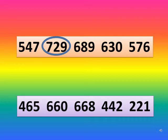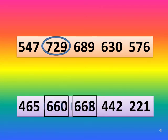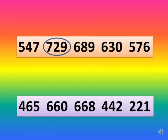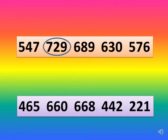But two numbers, 660 and 668, both have 6 at the hundreds place. So now compare the digit at tens place — in 660 it is 6, and in 668 it is also 6. As the digits at hundreds and tens place are equal, we compare the ones place. In 660 it is 0 and in 668 it is 8. Since 8 is greater, the number 668 is the greatest. Circle 668.